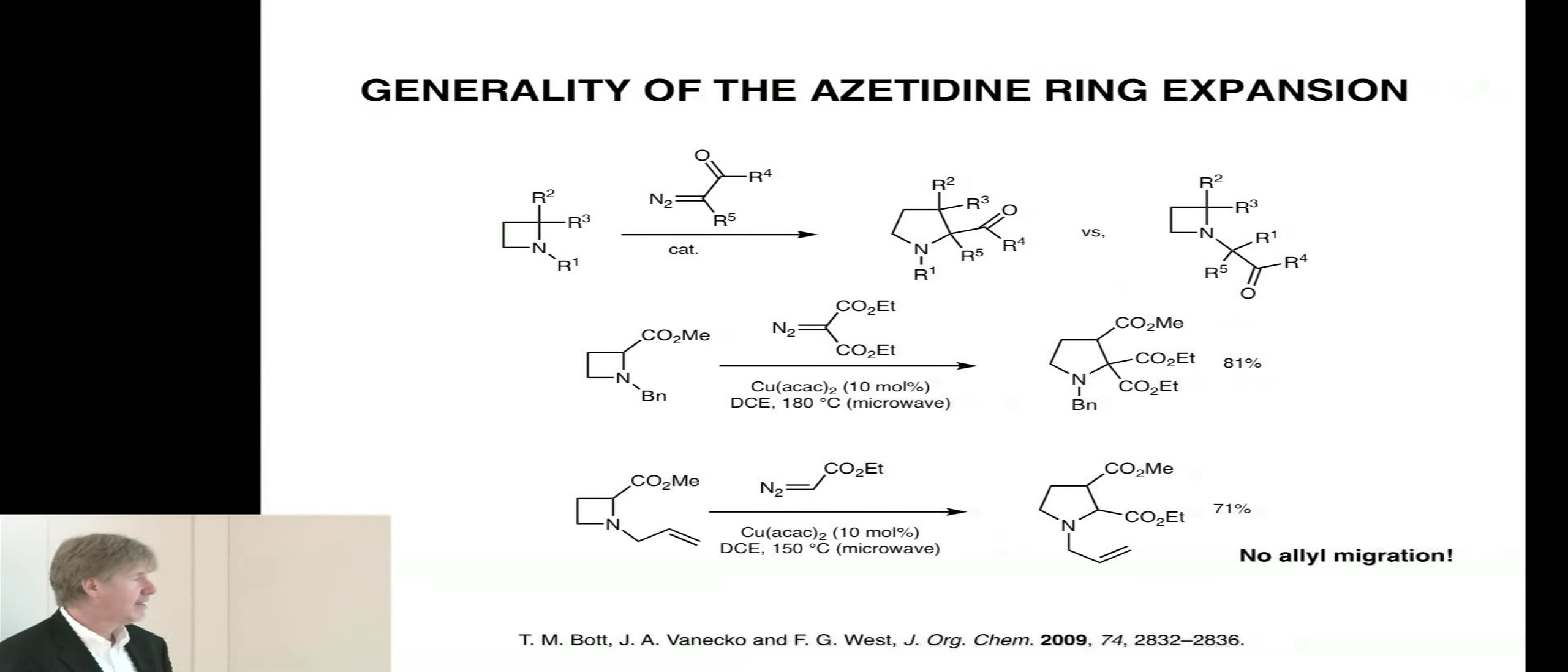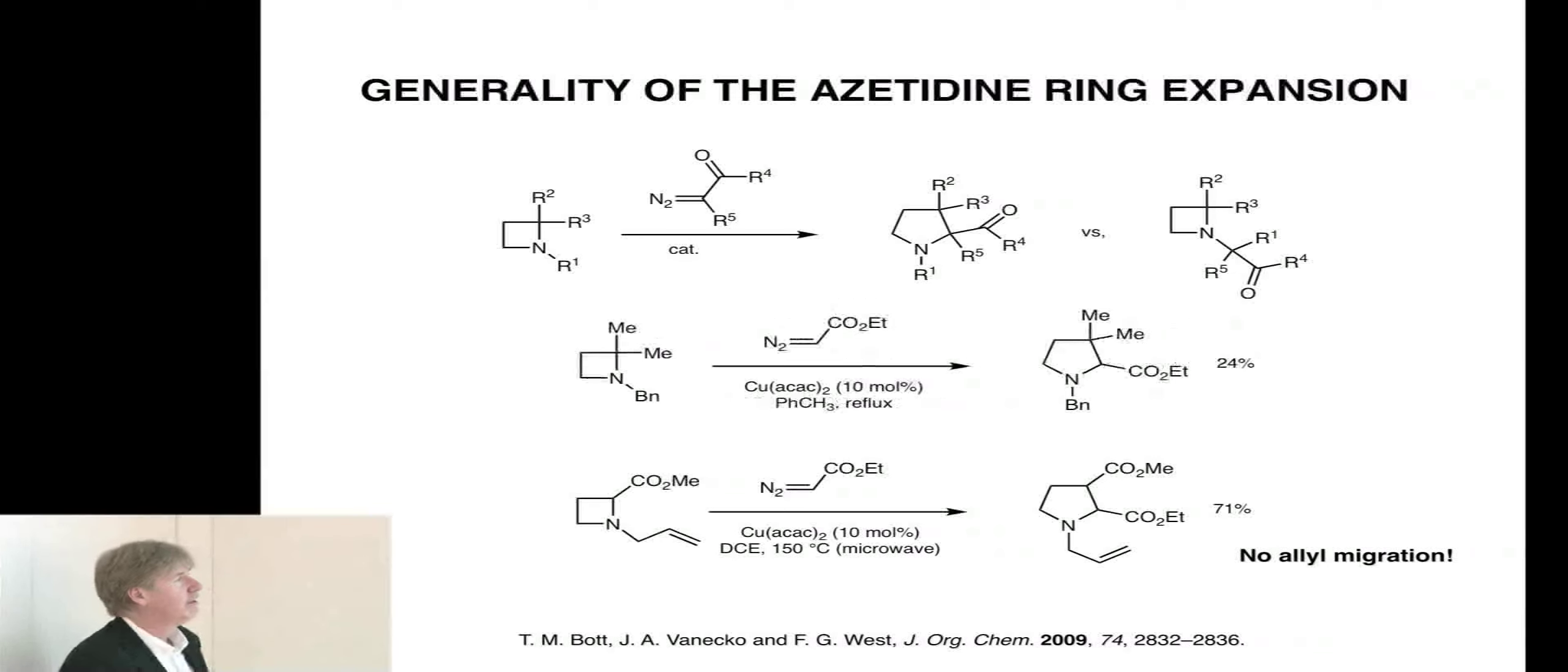She then looked at the N-allyl derivative, and we thought that was an interesting case, because I told you earlier that an allyl 2,3-shift should be much easier than a 1,2-shift. It should have a much lower barrier. And yet, with the N-allyl azetidine, we see only ring expansion, no allyl migration. That tells you that the ring strain of this azetidine is starting to totally dominate the chemoselectivity of the intermediate ylid.